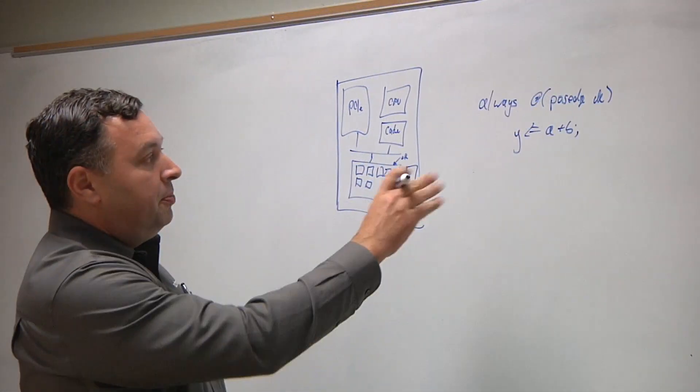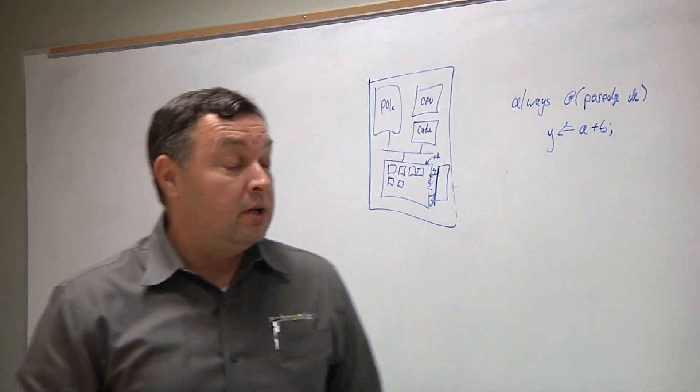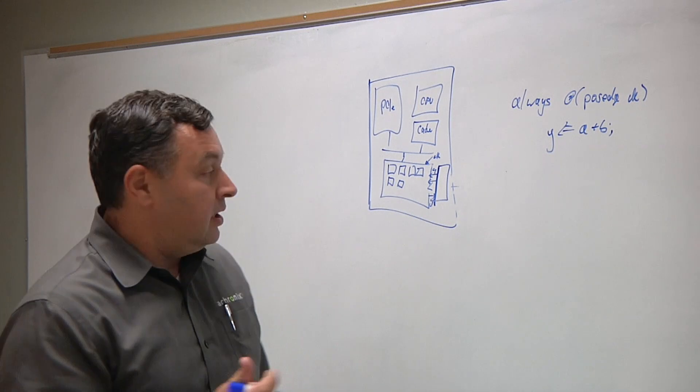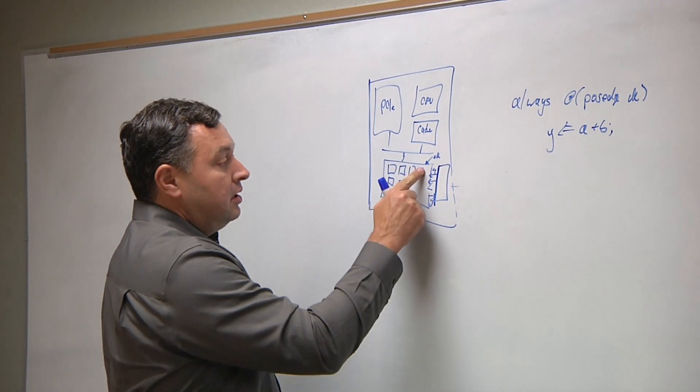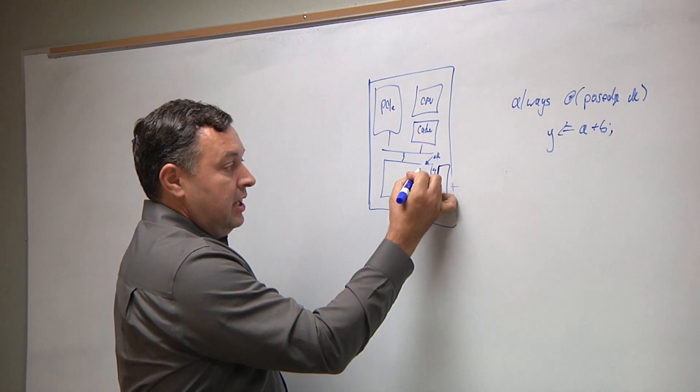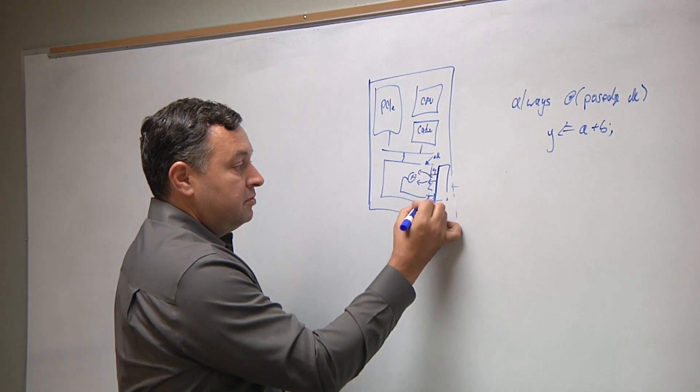You write this, you save it, open this file, run it through synthesis, run it through place and route, and about two minutes later you will have a bitstream that can be loaded in here, and this sea of gates becomes the adder that takes the A input, the B input, does an addition, and feeds the results back to Y.